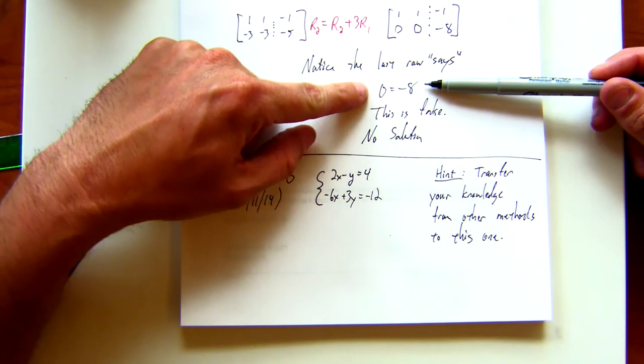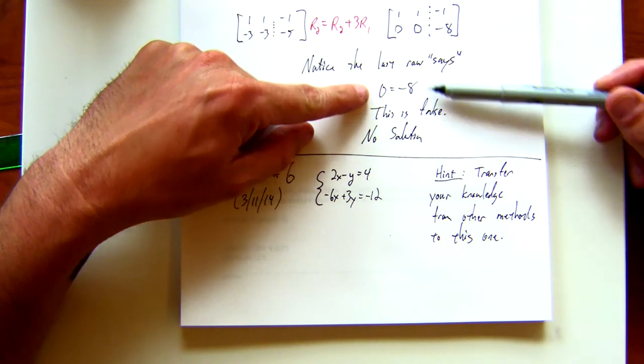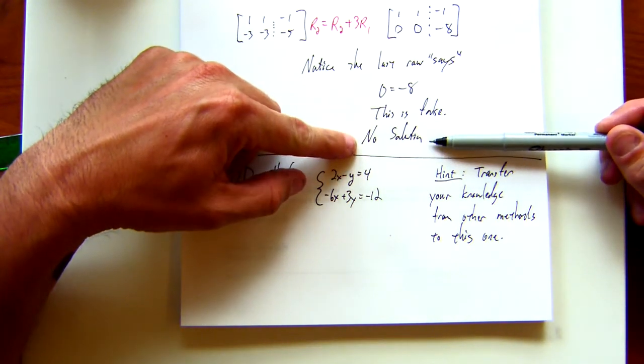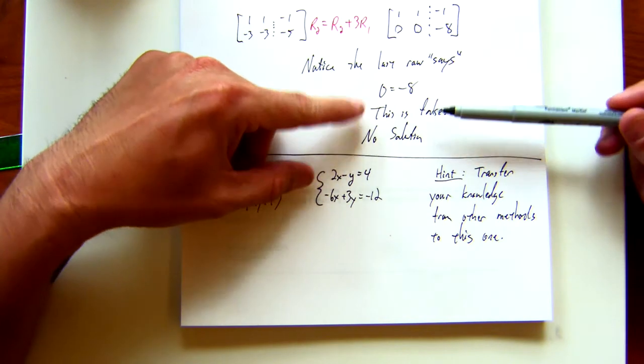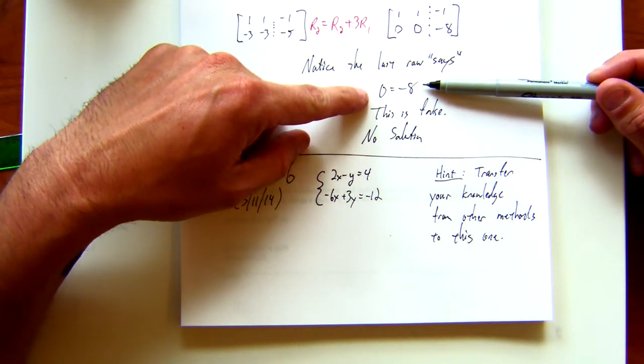Notice that when we got a false statement, that meant no solution. What do you think would happen if we did this and we got a true statement?